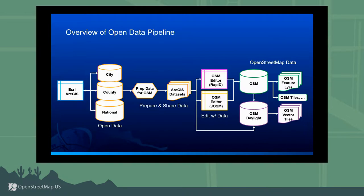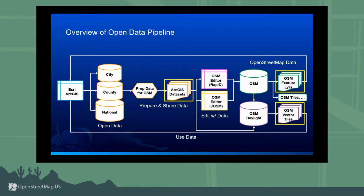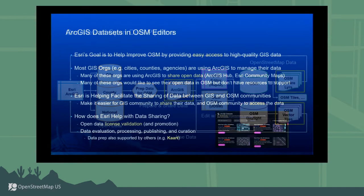Esri is producing a vector tile base map from that Daylight distribution. The back-again part comes in where these feature layers are being published back into ArcGIS applications, including our desktop, web, and mobile applications, as well as the vector tiles. And if you have your own application — maybe building something with open source software like OpenLayers, Leaflet, or Mapbox GL JS — you can also bring in those services as vector tiles and feature layers. That's how all the pieces kind of fit together.